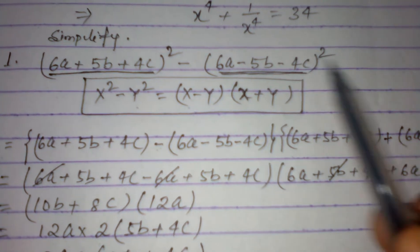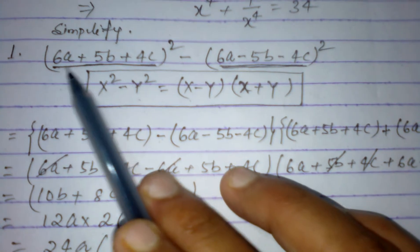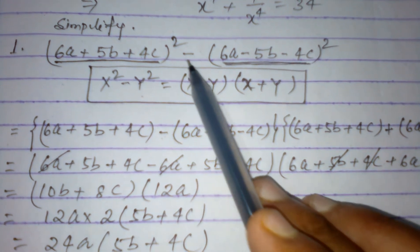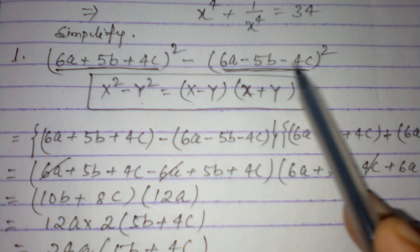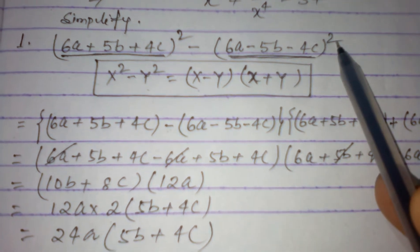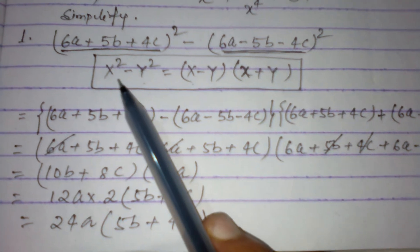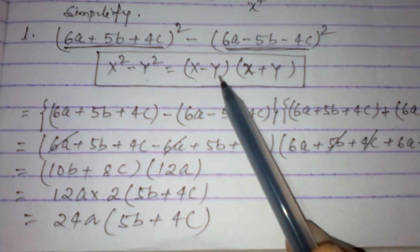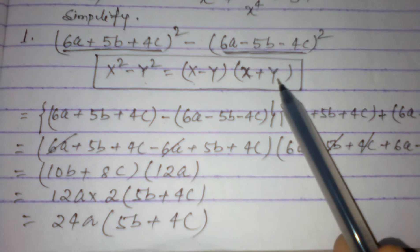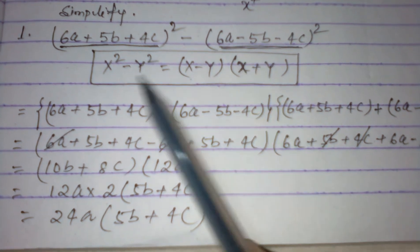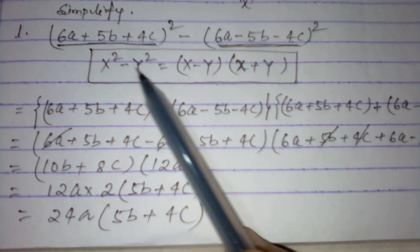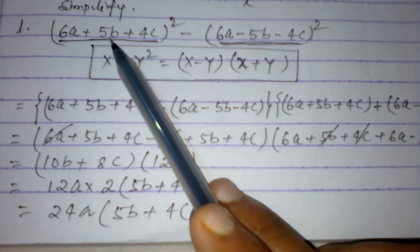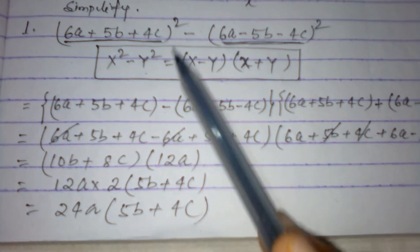Today we will simplify (6a + 5b + 4c)² minus (6a - 5b - 4c)². We know that x² minus y² is equal to (x - y)(x + y). The given question is in the form of x² minus y². In place of x we have 6a + 5b + 4c.